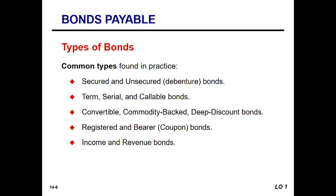Convertible bonds are an issue that allows the bond to be converted to capital stock by the bondholder. The bondholder can determine they no longer want to be a creditor but instead want to be an equity holder — an owner. This converts the instrument from a liability into a part of equity.